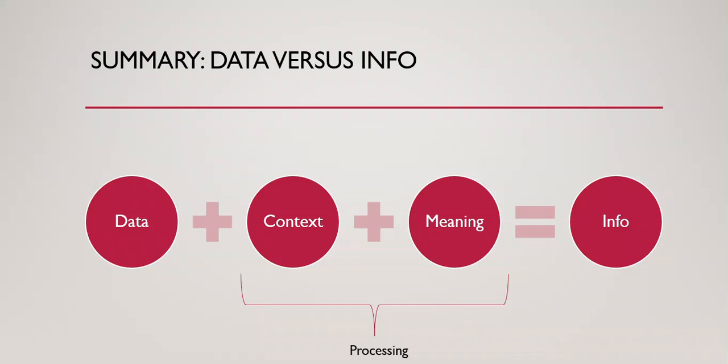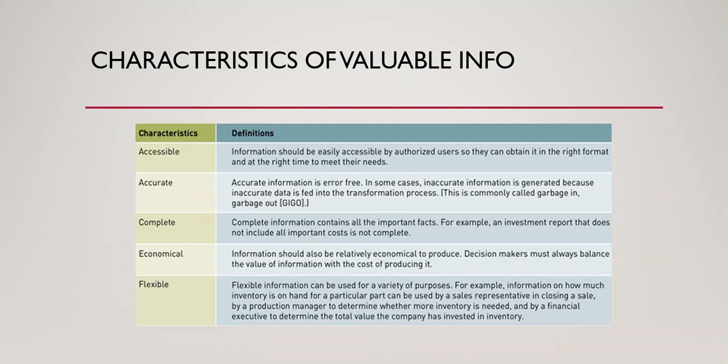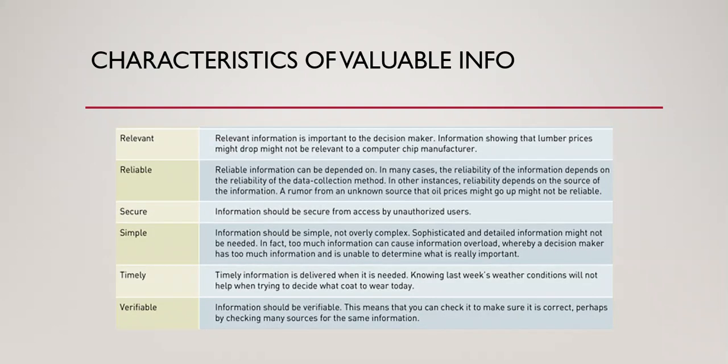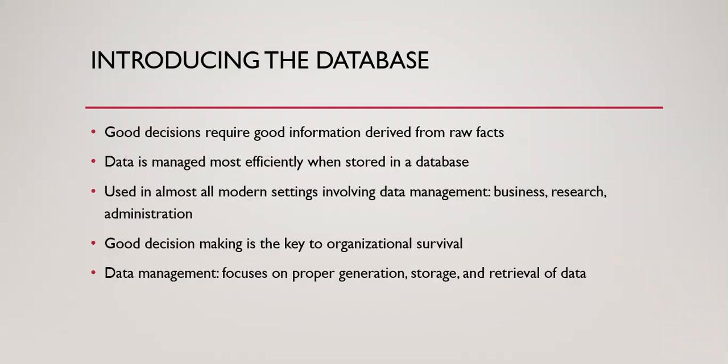So this is the summary: data plus context plus meaning will become info. And then we have seen some characteristics of valuable info — accurate, accessible, complete, and so on.